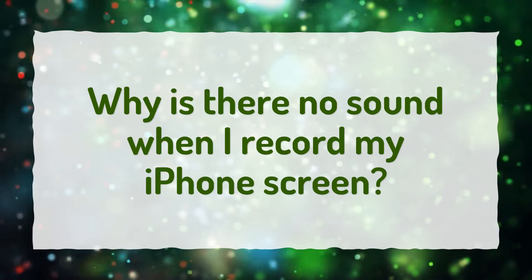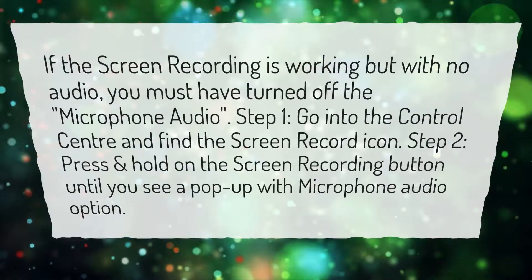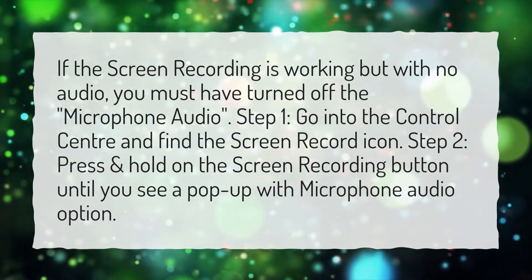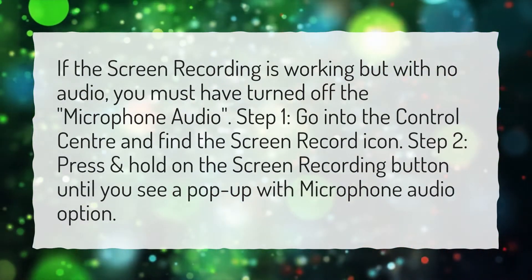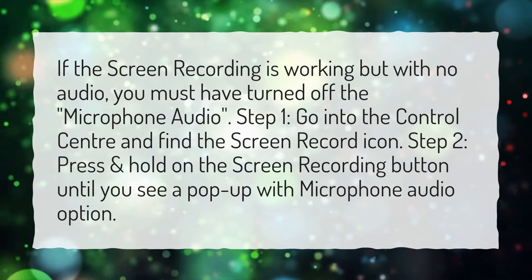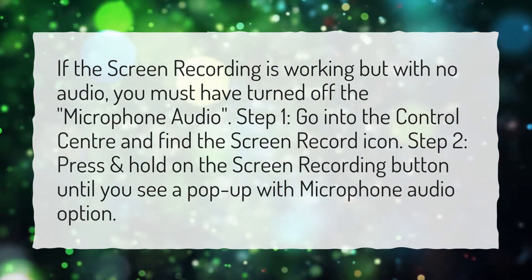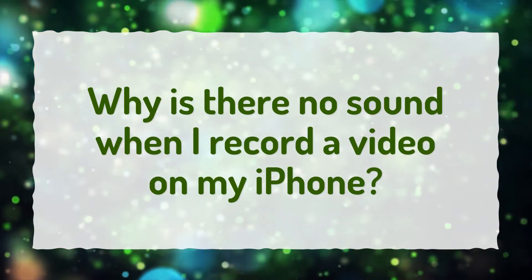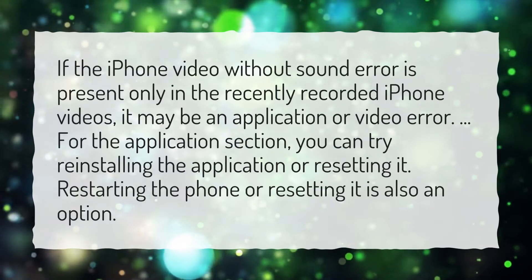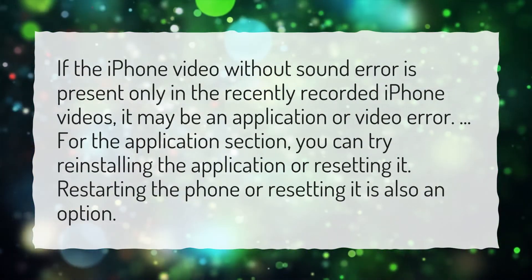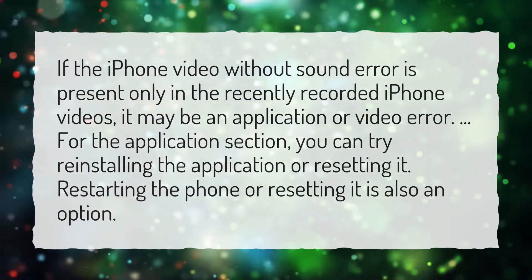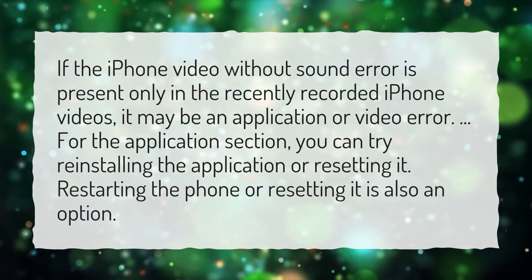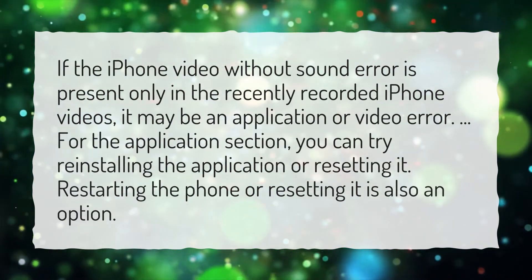Why is there no sound when I record my iPhone screen? If the screen recording is working but with no audio, you must have turned off the microphone audio. Step 1: Go into the control center and find the screen record icon. Step 2: Press and hold on the screen recording button until you see a pop-up with the microphone audio option. If the iPhone video without sound error is present only in recently recorded videos, it may be an application or video error. You can try reinstalling or resetting the application. Restarting or resetting the phone is also an option.